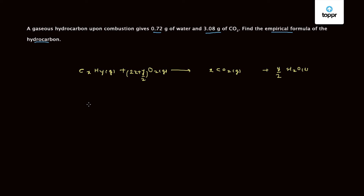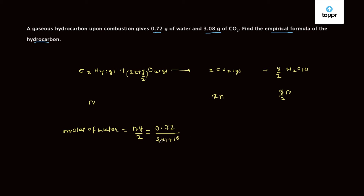Let there be N moles of this hydrocarbon. Corresponding CO2 will have X times N moles, and water will have Y/2 times N moles. So the moles of water, according to our equation, is N times Y/2. This equals 0.72 divided by the molecular weight of water, which is 2×1 + 16 = 18. So 0.72 divided by 18 equals 0.04. Therefore, NY equals 0.08.